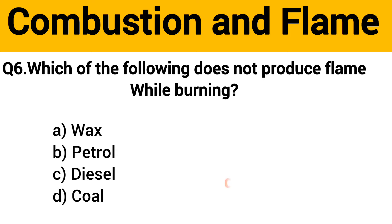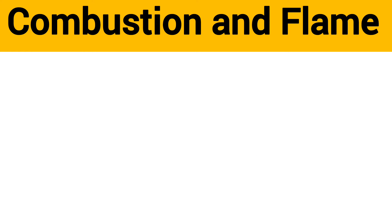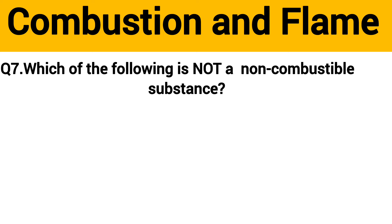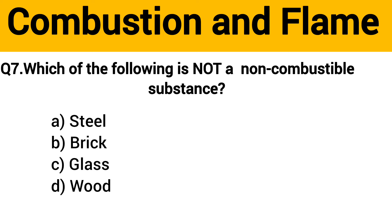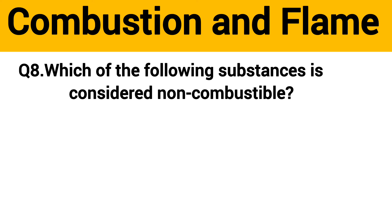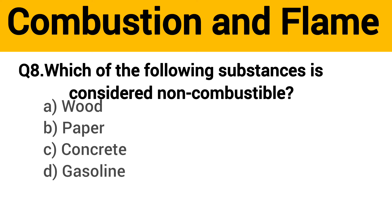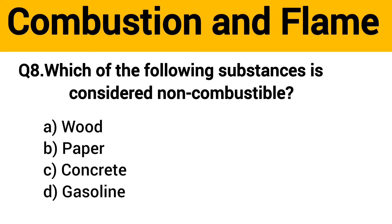The right answer is option D: Coal. Question number 7: Which of the following is not a non-combustible substance? The right answer is option D: Wood. Question number 8: Which of the following substances is considered non-combustible?